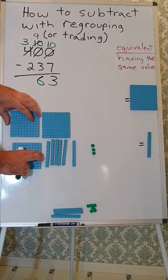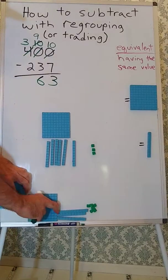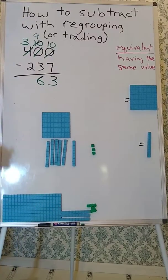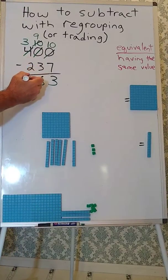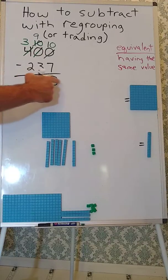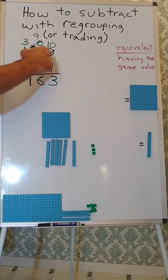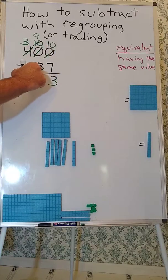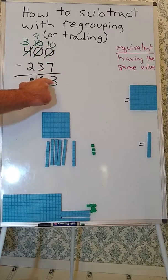And we need to take away 2 hundreds. So we'll do that. And we have 100 left. So our difference is 163. So 400 minus 237 is 163.